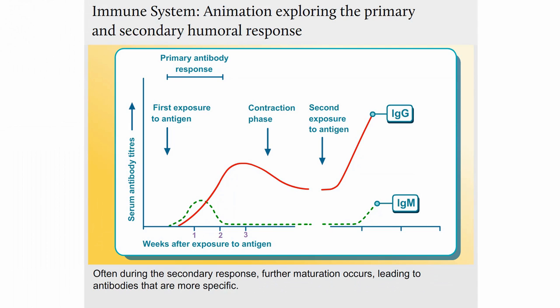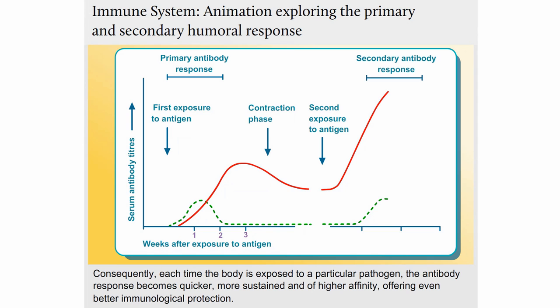Often, during the secondary response, further maturation occurs, leading to antibodies that are more specific. Consequently, each time the body is exposed to a particular pathogen, the antibody response becomes quicker, more sustained and of higher affinity, offering even better immunological protection.